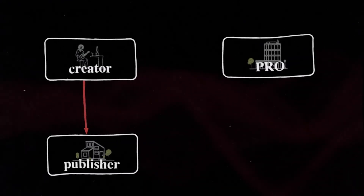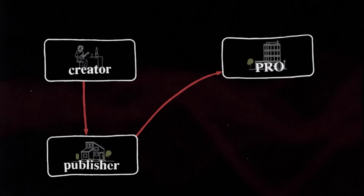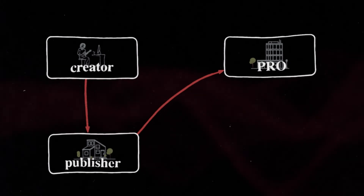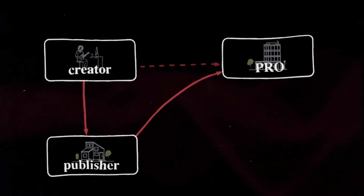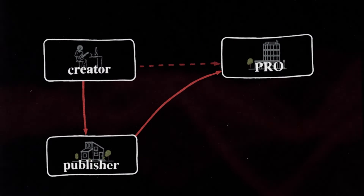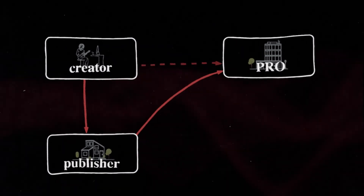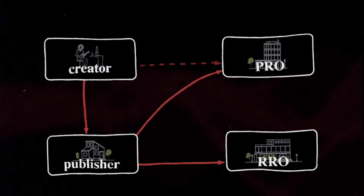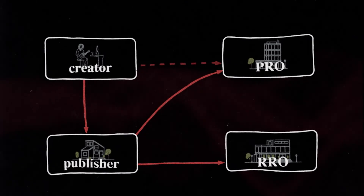The publisher registers the work with a performing rights organization, or PRO, in their territory, enabling it to administer performing rights. Music creators have the ability to register works with PROs as well, but it's usually the publisher's responsibility to do so. The publisher also registers the work with a reproduction rights organization, or RRO, enabling it to administer mechanical rights.